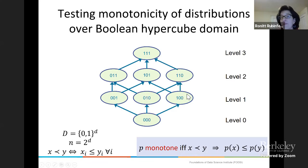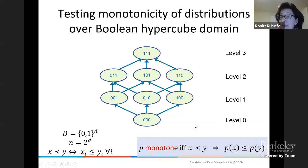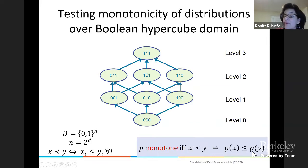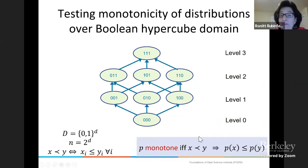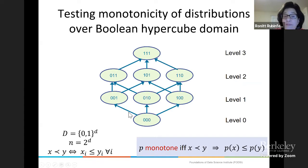If we assign a probability distribution to nodes in this domain, we say it is monotone if whenever domain element x is less than domain element y, then the probability assigned to x is also less than or equal to the probability assigned to y. That's the definition of a monotone distribution over a partial order — what you would expect. If x and y are unrelated, like 001 and 100, we can say nothing about P(x) versus P(y). But if one can reach the other via directed edges, the distribution must be increasing going up.